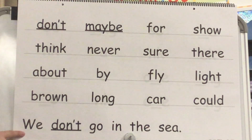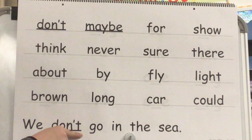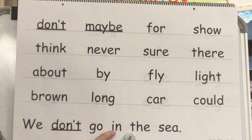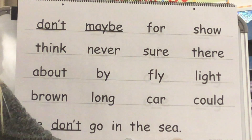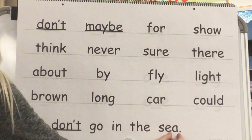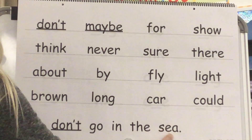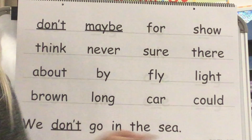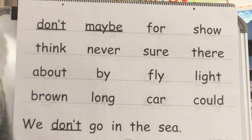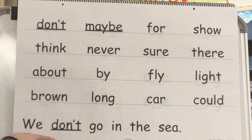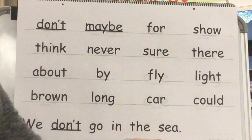Let's read our sentence. Word? We. Word? Don't. We don't. Word? Go. Word? In. We don't go in. Word? The. Sound: E. Blank: S-E. Word? See. We don't go in the C. Your turn: We don't go in the C. Great job.